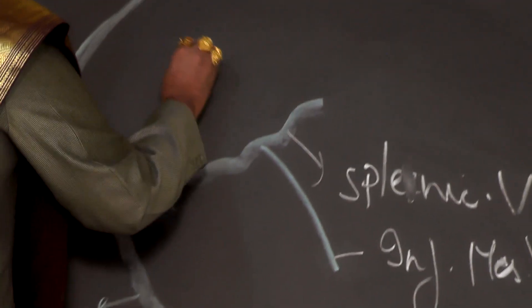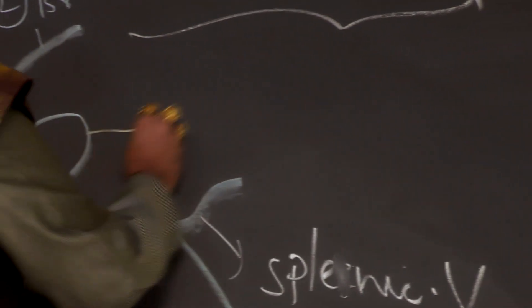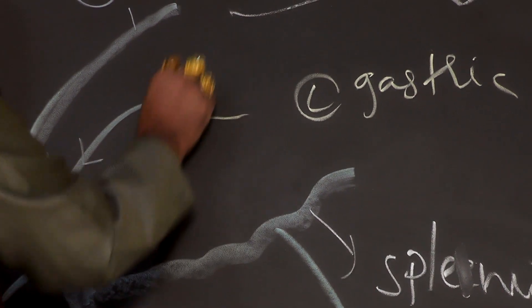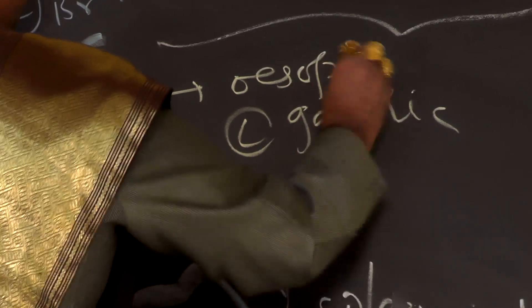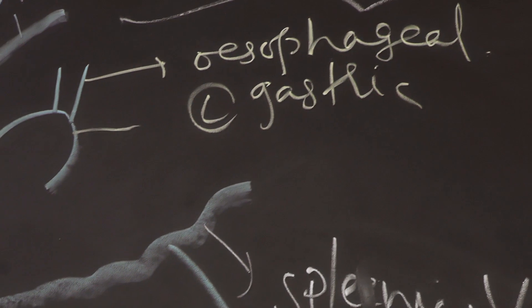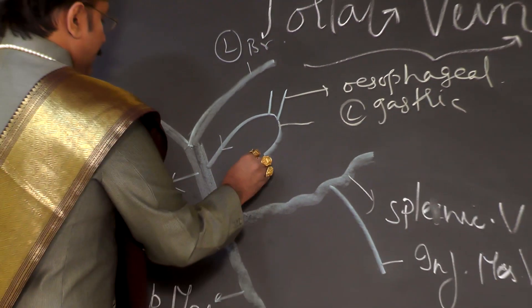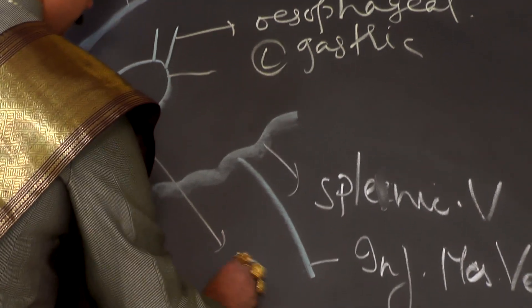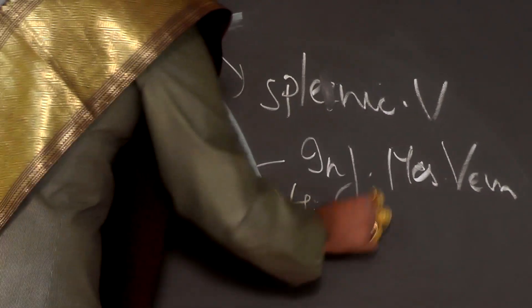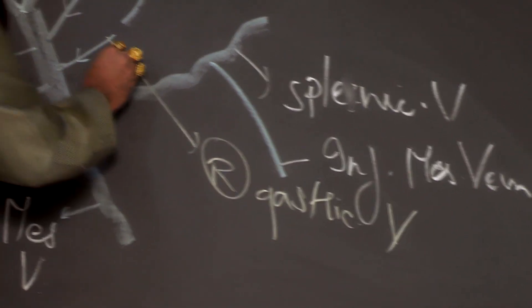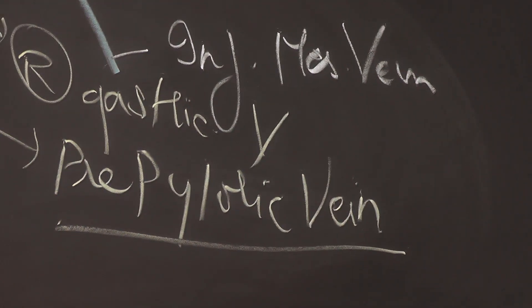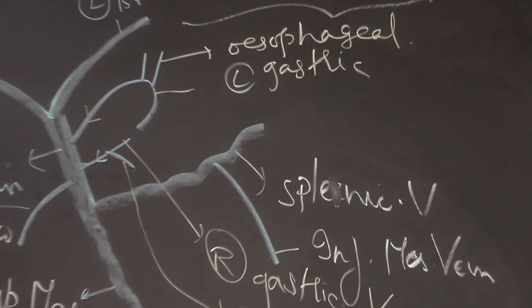We also have the left gastric vein, which is opening into the portal vein. Into the right gastric vein, there is one special vein opening — the pre-pyloric vein. The pre-pyloric vein is opening into the right gastric vein. And into the left gastric vein, we have the esophageal veins that are opening up.